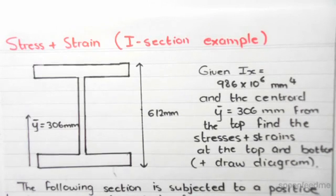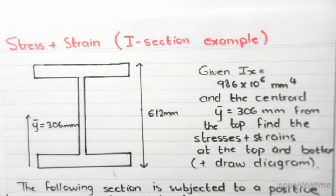We're given the value of IX which is 986 times 10 to the 6 millimeters to the power of 4. We need to find the stresses and strains at the top of the top flange and the bottom of the bottom flange, and we need to draw the diagram.